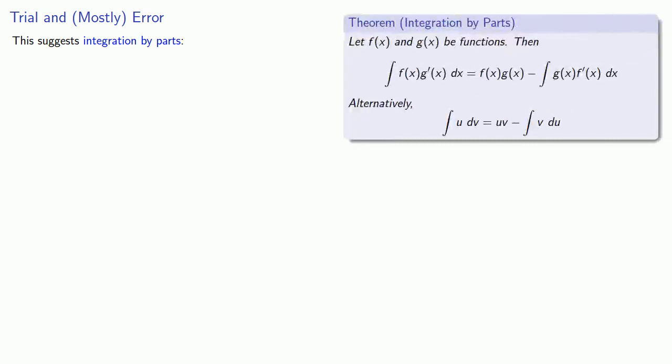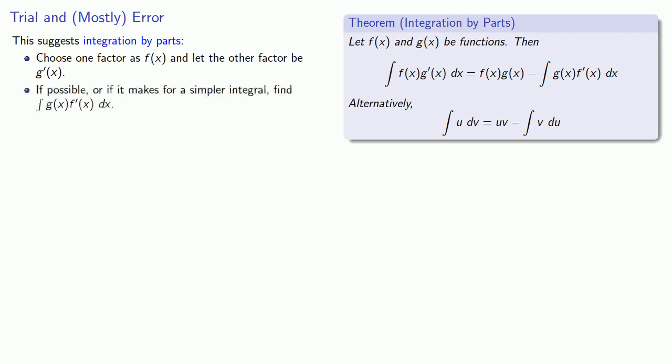This theorem suggests integration by parts. If we want to find the integral of a product of functions, we'll choose one factor as our f(x) and let the other be our g'(x). If possible, or at least if it makes for a simpler integral, find the integral of g(x)f'(x). If it's not possible, make a different selection.